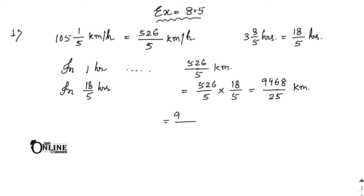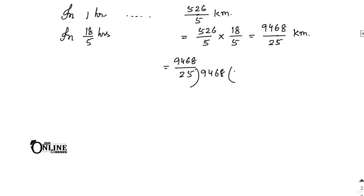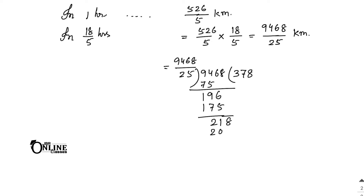Now convert 9468/25 to a mixed fraction by dividing by 25. First: 25 × 3 = 75, subtract from 94 gives 19; bring down 6 to get 196. Then 25 × 7 = 175; subtract gives 21; bring down 8 to get 218. Finally 25 × 8 = 200; remainder is 18. So the answer is 378 and 18/25 kilometer.